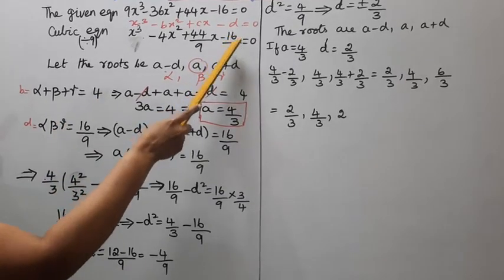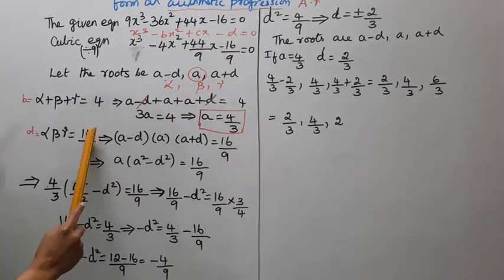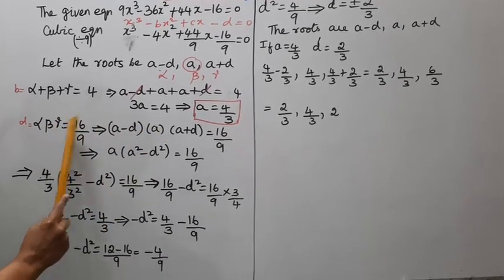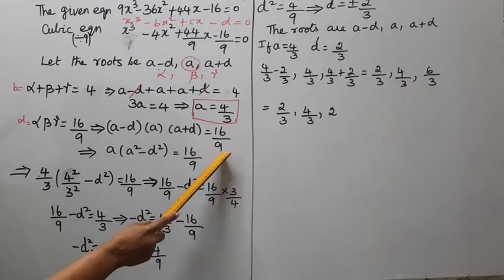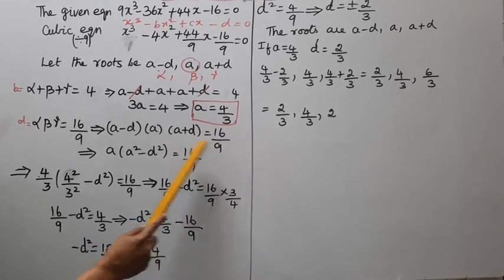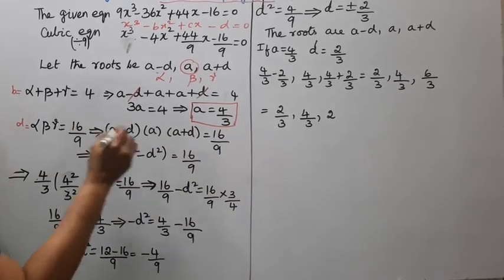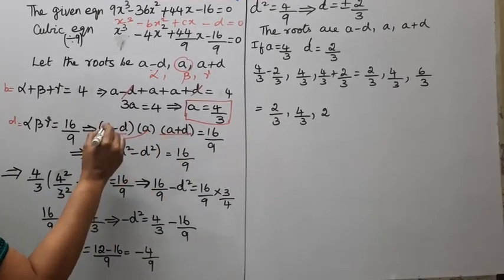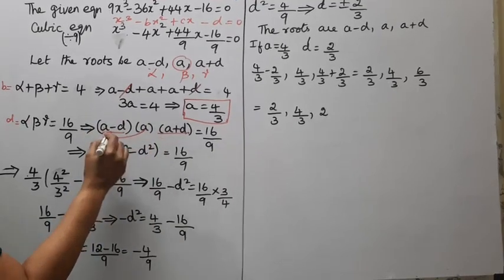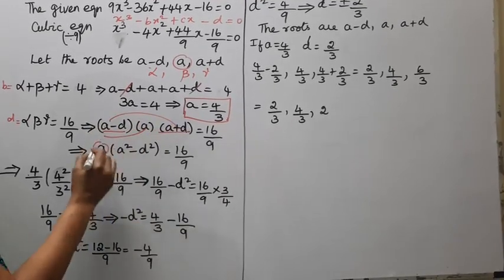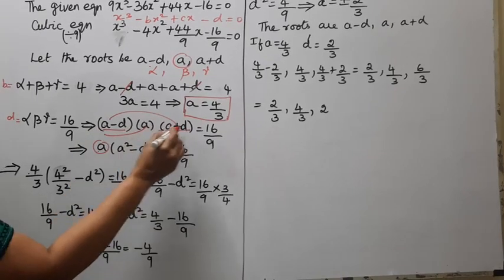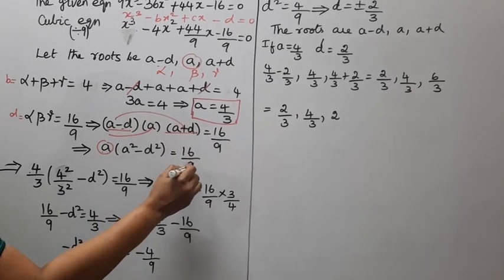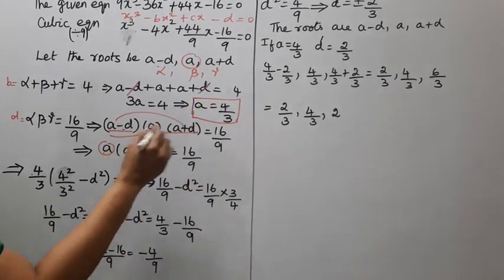Alpha times beta times gamma equals 16 by 9. With alpha as a minus d, beta as a, and gamma as a plus d, the product is a(a² minus d²) equal to 16 by 9. Since a equals 4 by 3, this becomes 4 by 3 times (a² minus d²) equal to 16 by 9.